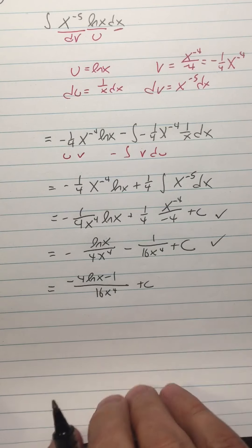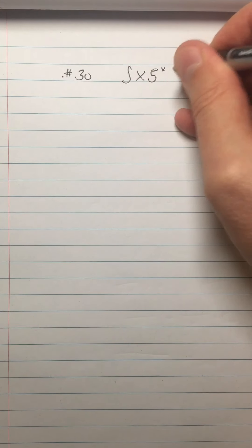I also wanted to do number 30 from this page. Just to remind you a little bit of an oft-forgotten antiderivative you can do. So I have, number 30 is integral of x five to the x dx.